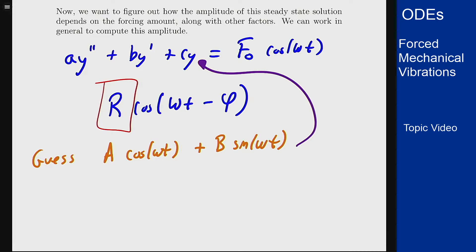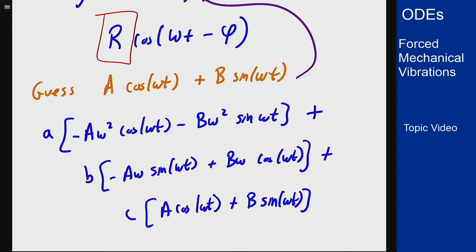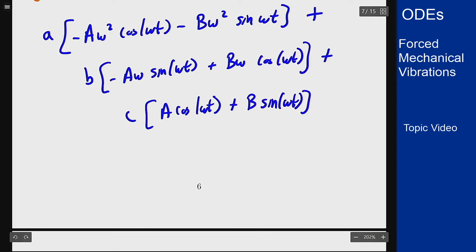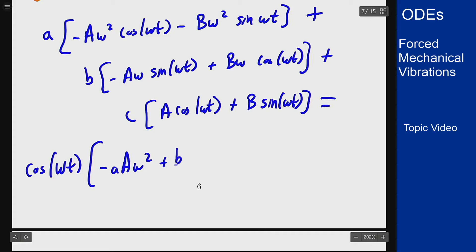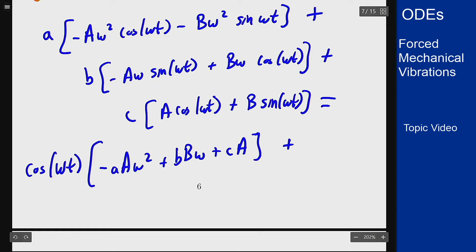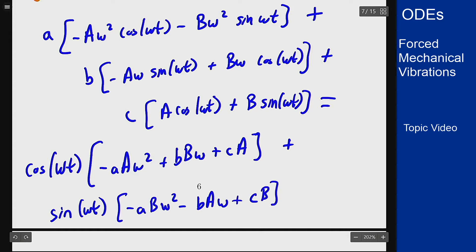Plugging in the derivatives and grouping each set by the trig functions attached, I will see I have cosine of omega t times negative little a times big A times omega squared plus little b times big B times omega plus c times A, and a sine of omega t times negative little b times omega squared minus little b times big A times omega plus c times B, and I want this to equal f0 cosine of omega t.